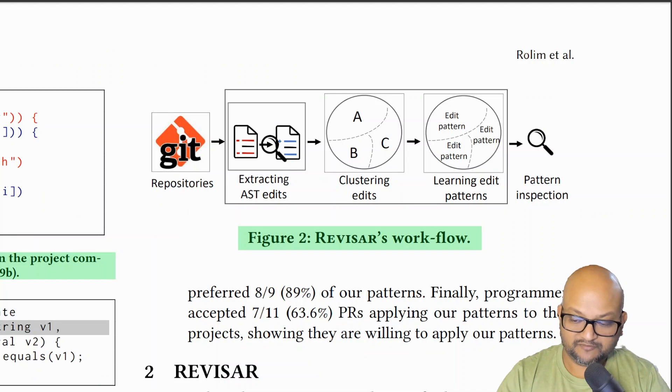The tool the authors have built is called Revisor. This is a very high level look at its overall flow. It starts by looking at git repositories and their commit history, and it extracts those commits as edits to an abstract syntax tree.